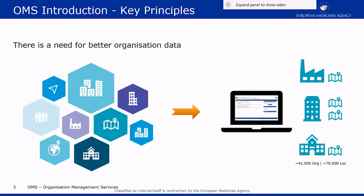This follows the need for better organization data, and to initially build our dictionary we actually used five internal sources, one of them being XEVMPD, another being EudraGMDP. Of course, we rely on users to help us maintain our data and make sure that what we have is up-to-date, and this happens through change requests.